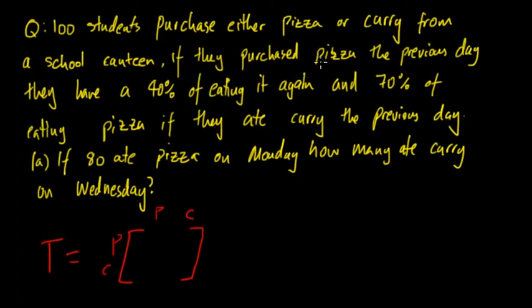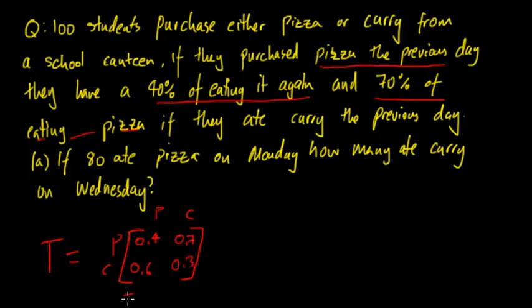So if they purchased pizza the previous day they have a 40% chance of eating it again. So that's basically pizza to pizza, so 0.4. So that means if they ate pizza the previous day they have a 0.6 chance of eating curry. Now 70% chance of eating pizza if they ate curry the previous day. So that means curry on the previous, pizza on the current, so we put in 0.7 and then we know that this has to equal 0.3 so once again that equals 1 and that equals 1. So we can work out the transition matrix.